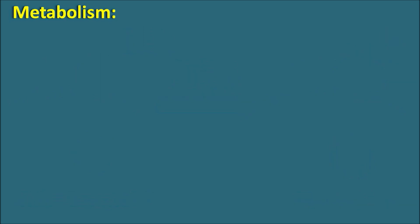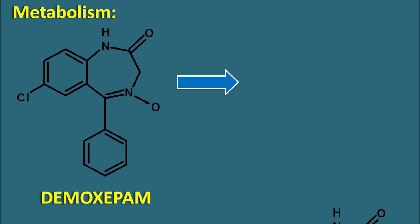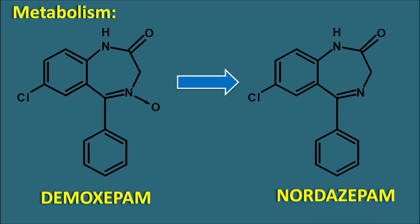Demoxepam can be converted into another metabolite, Nordazepam. Nordazepam is a common metabolite of many benzodiazepines like Diazepam — the N-oxide group is simply removed to produce Nordazepam. This Nordazepam is an active metabolite with a very long half-life compared with the parent benzodiazepine. That is why Chlordiazepoxide is a long-acting benzodiazepine. All benzodiazepines that are converted into Nordazepam have a long duration of action.